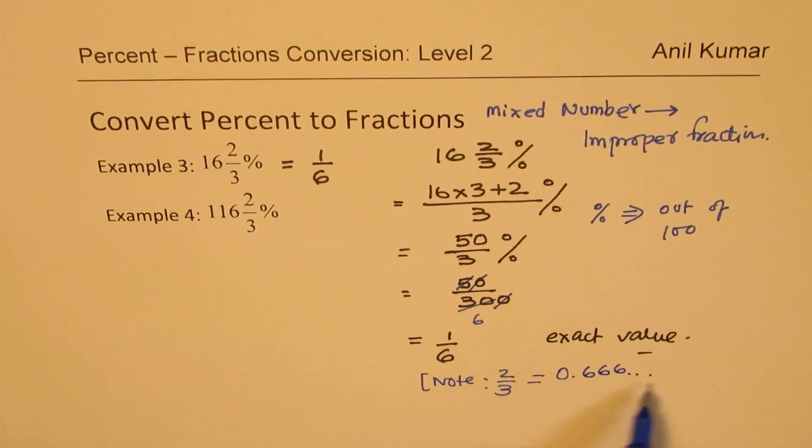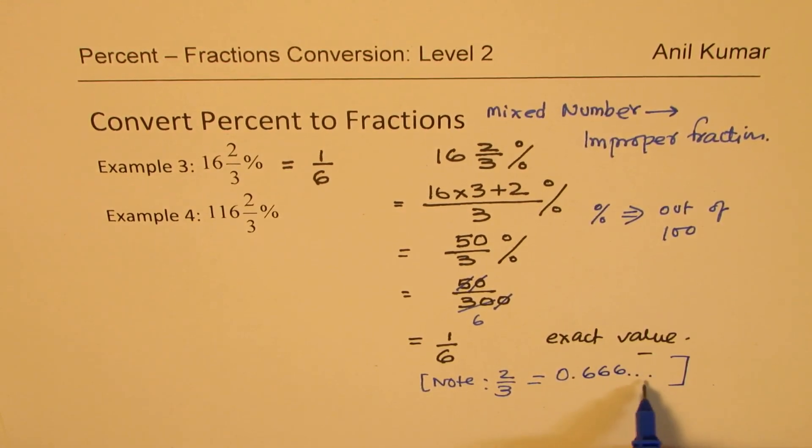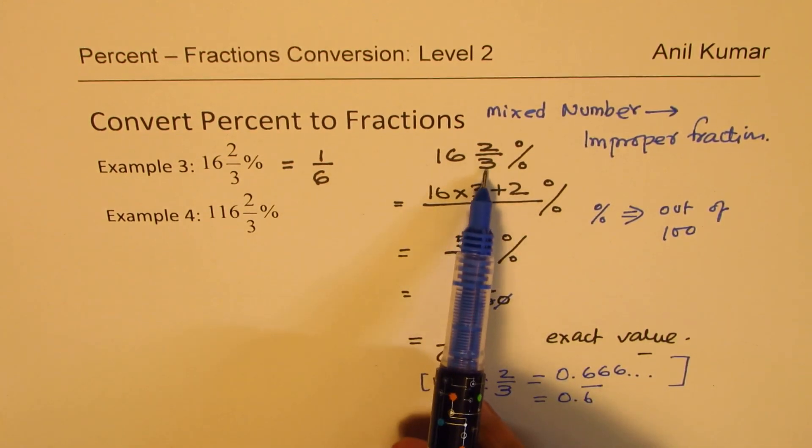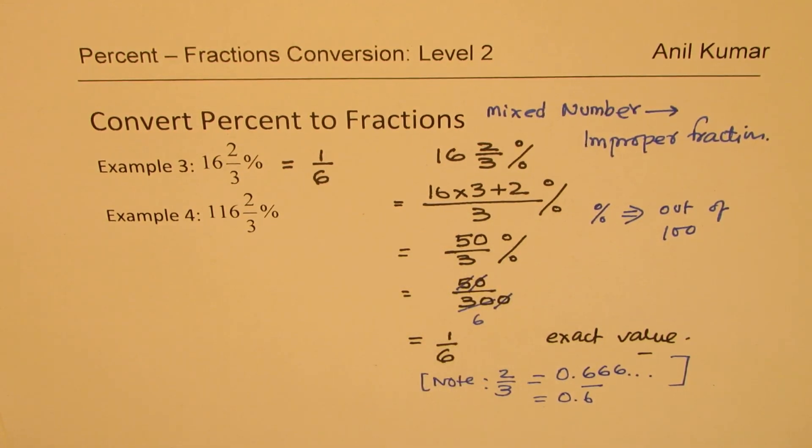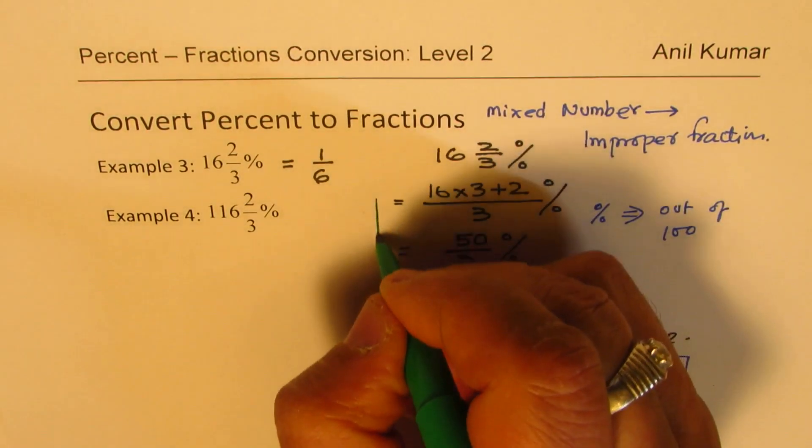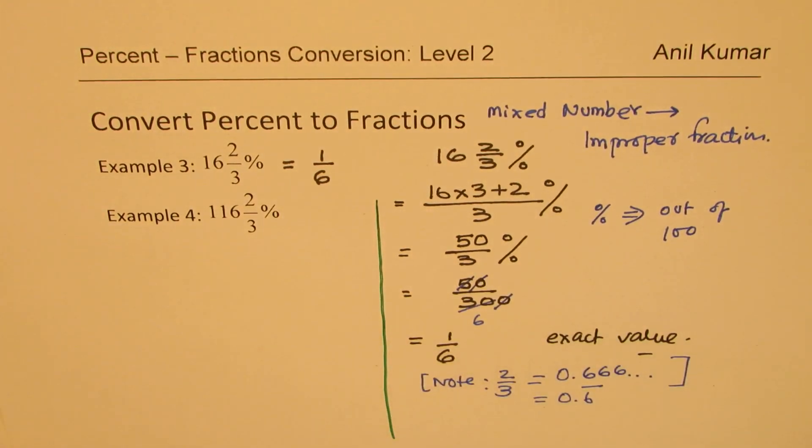But you could write this as 0.6 recurring. Now that is a difficult number to work with. So fraction is a better approach. You get an idea? So whenever you end up with such numbers, use fractions, the approach which we have taken up with this example. I hope it makes sense. So that is the idea of taking this type of an example here.